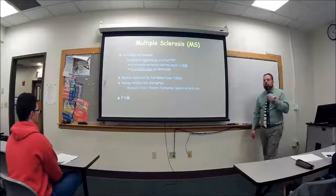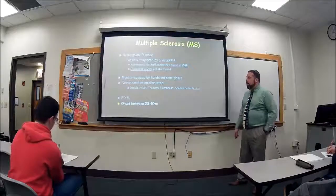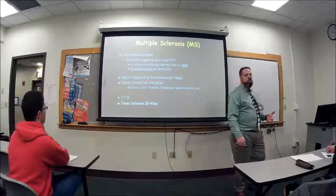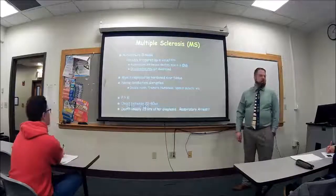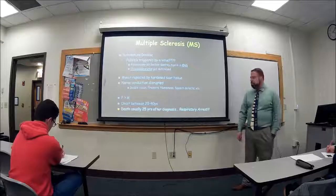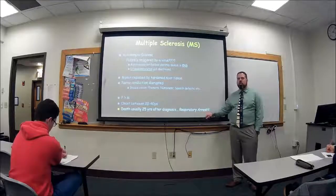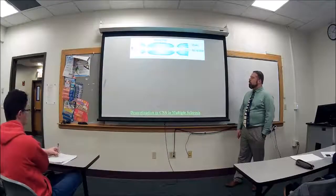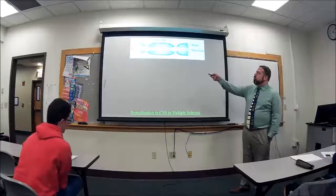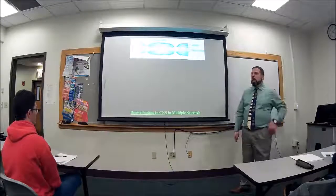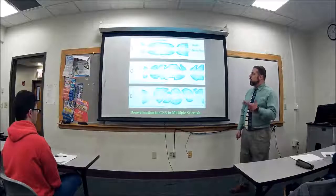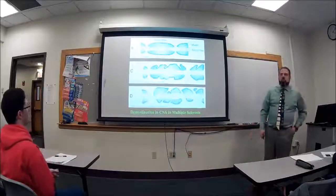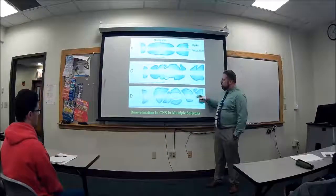Females, as with most autoimmune diseases, are affected more than males. Onset is usually between 20 and 40 years old. Once diagnosed, the average lifespan is about another 25 years. Death usually occurs from respiratory arrest when the diaphragm and respiratory muscles are affected. With MS, the myelin on the neuron gets sclerosed and scarred, the actual neuron starts getting destroyed, and it can no longer generate an action potential.